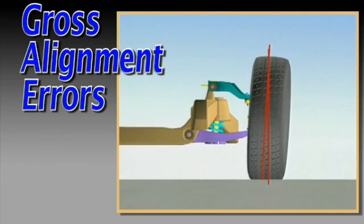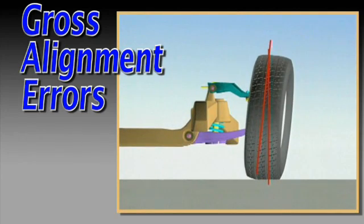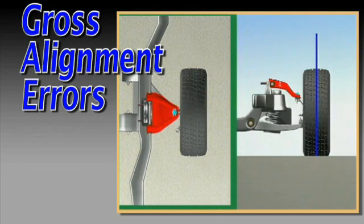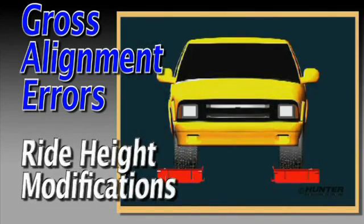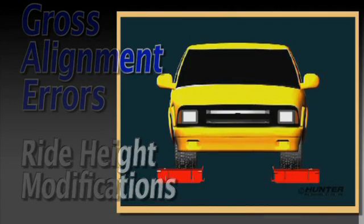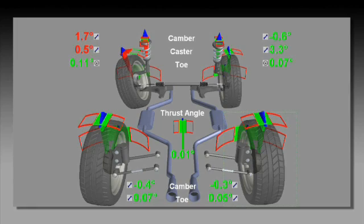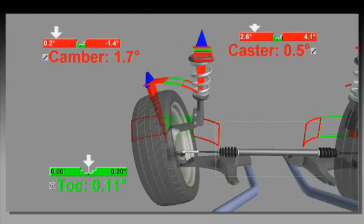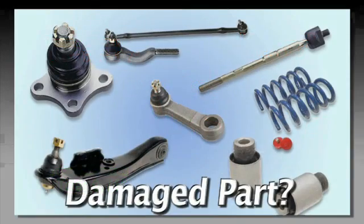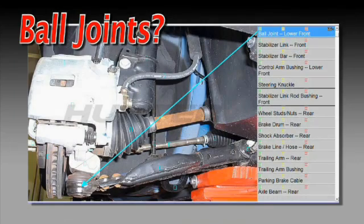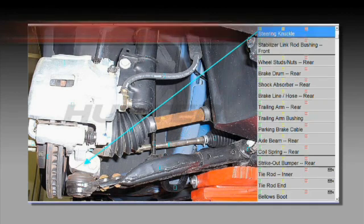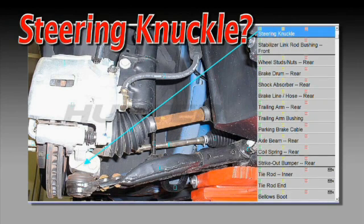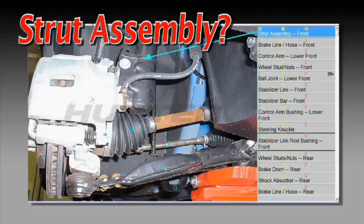Unlike gradual alignment changes from spring sag or parts wear, large variations may be due to damaged parts and or modifications in ride height. If the alignment problem is restricted to only one wheel position, a damaged part may be the cause. Although it is sometimes impossible to narrow it down to a single component, the following approach will help reduce much of the troubleshooting time and guesswork.